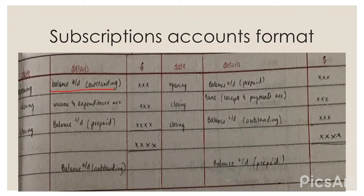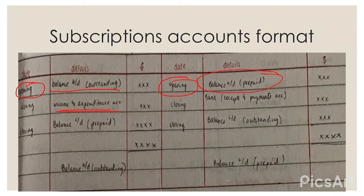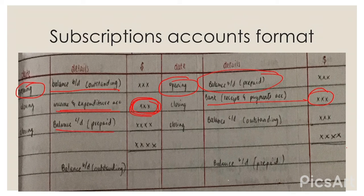This is the balance brought down outstanding — the opening balance at the start of the year. The balance brought down prepaid is also the opening balance at the start of the year. The income and expenditure account amount is what we need to find. We also record the bank amount, which is the subscriptions amount from the receipts and payments account. Then we record the balance carried down prepaid and balance carried down outstanding — the closing amounts at the end of the year.